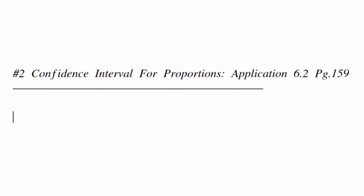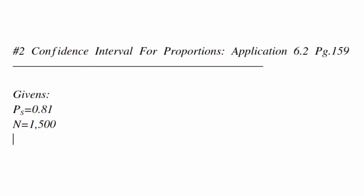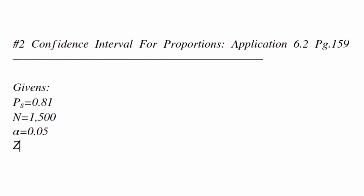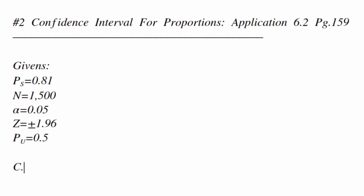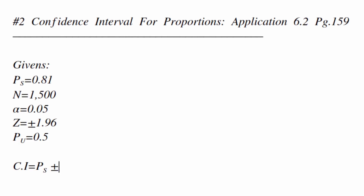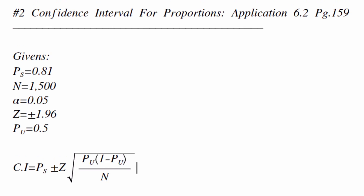Now let's solve 6.2. Step 1: Let's establish our given variables. Our population sample proportion PS equals 0.81. Our number of cases n equals 1,500. Alpha equals 0.05. Our z-score is 1.96, and our population value PU equals 0.5. Step 2: Write out the equation for confidence interval for proportions. The equation is: CI = PS ± z × √(PU(1 − PU) / N).